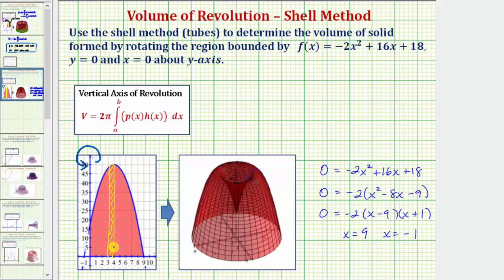And the radius function gives us the distance from the rectangle to the axis of rotation, which would be this distance here. Notice this is a horizontal distance, which would always be equal to x. So rho of x is equal to x.